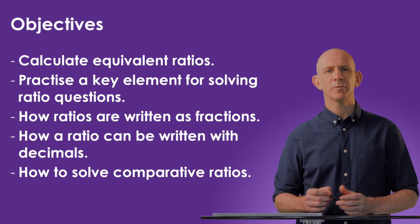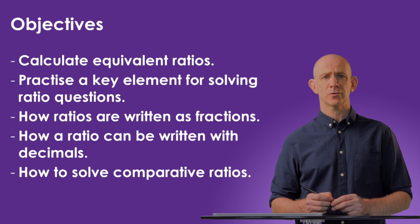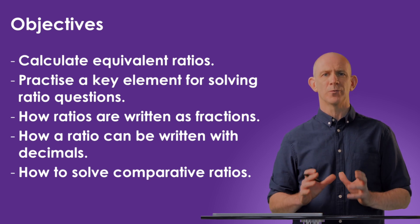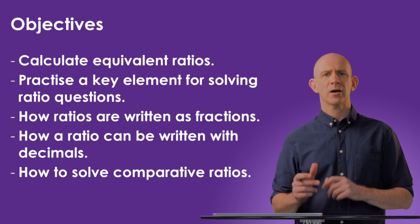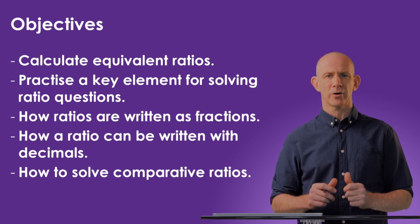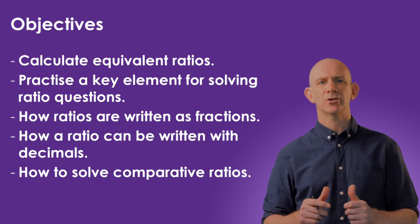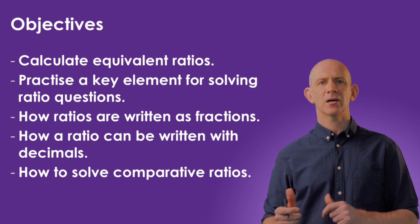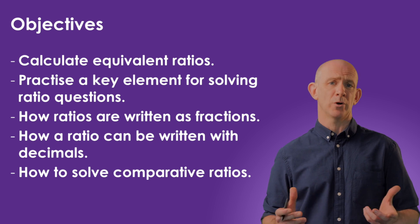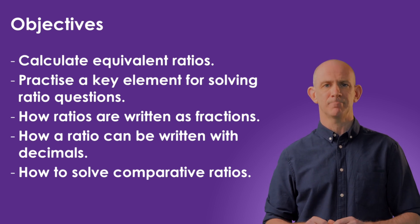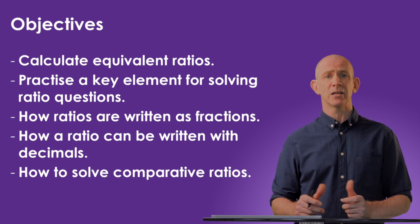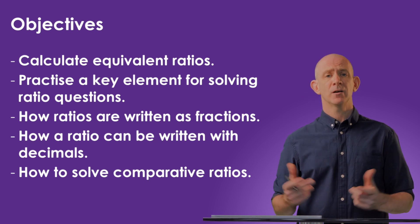Through this lesson, you've been able to see how we go about calculating equivalent ratios, using the element of finding one share to solve these types of ratio questions. We've looked at how ratios can be written as fractions, how to use the shares or parts of the ratio in that context, and how a ratio can be written with decimals. Lastly, we looked at how to use comparative ratios to solve questions that involve more than one ratio with a shared element. In the next video, we will look at the use of proportionality in dealing with questions around recipes, and I'll see you then.